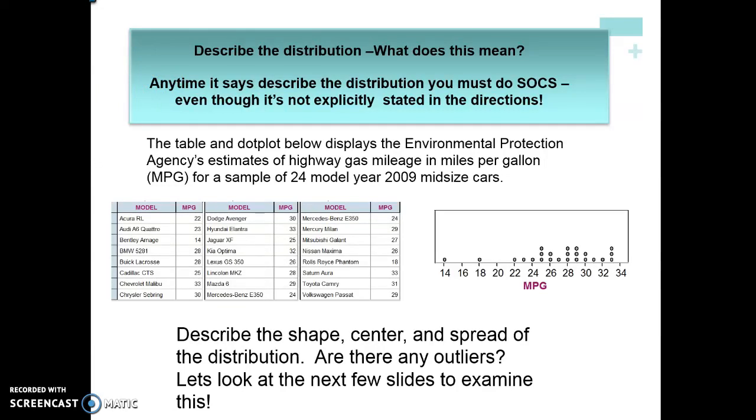Now when the directions say describe the distribution, you have to think to yourself what does that mean. Anytime directions state describe the distribution, you have to know to do socks - spread, center, outliers, and shape. I usually think of shape, outlier, center, spread. Even though it's not explicitly stated in the directions, you must know to do socks.